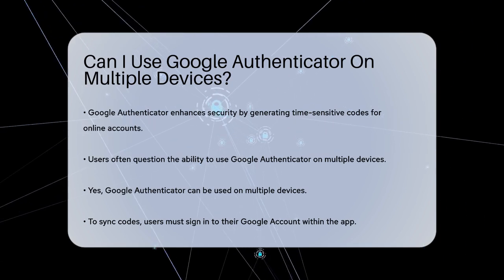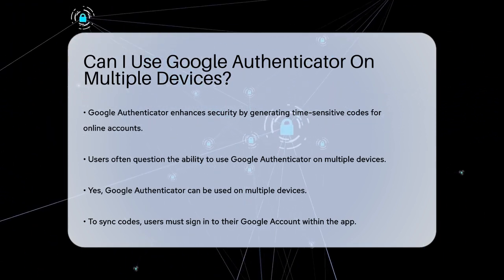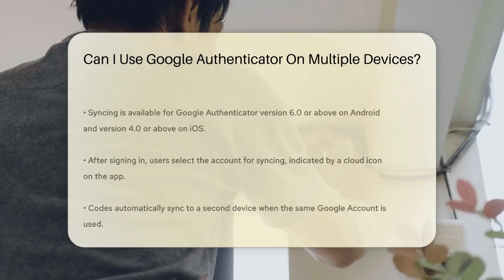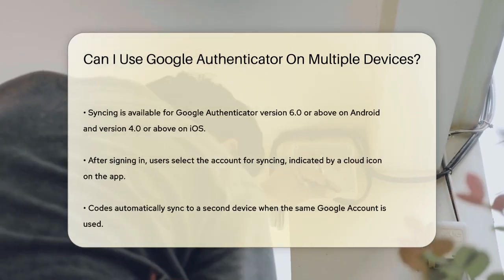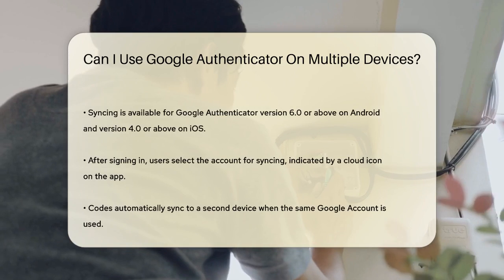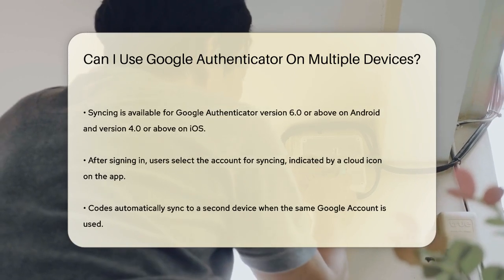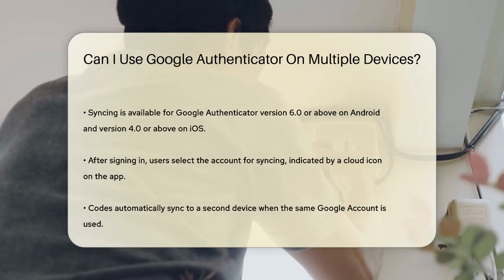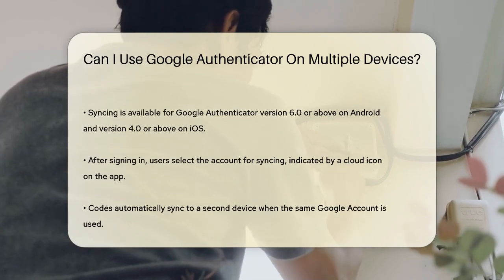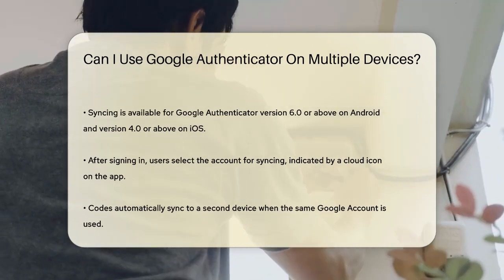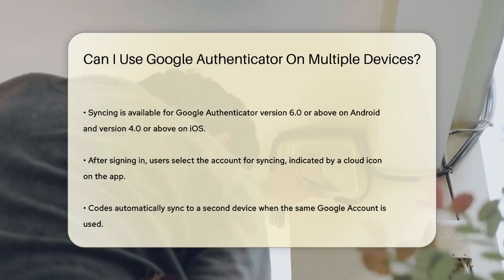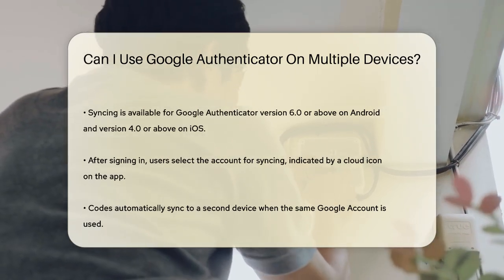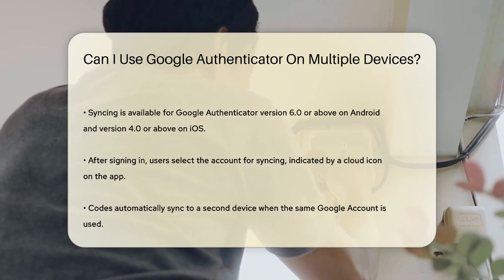To sync your Google Authenticator codes across multiple devices, you need to sign in to your Google account within the app. This feature is available if you have version 6.0 or above on Android or version 4.0 or above on iOS. Once you sign in to your Google account, the app will prompt you to select the account you want to use for syncing. After selecting the appropriate account, you'll see a cloud icon at the top of the screen indicating that your 2FA data is being backed up to the cloud.